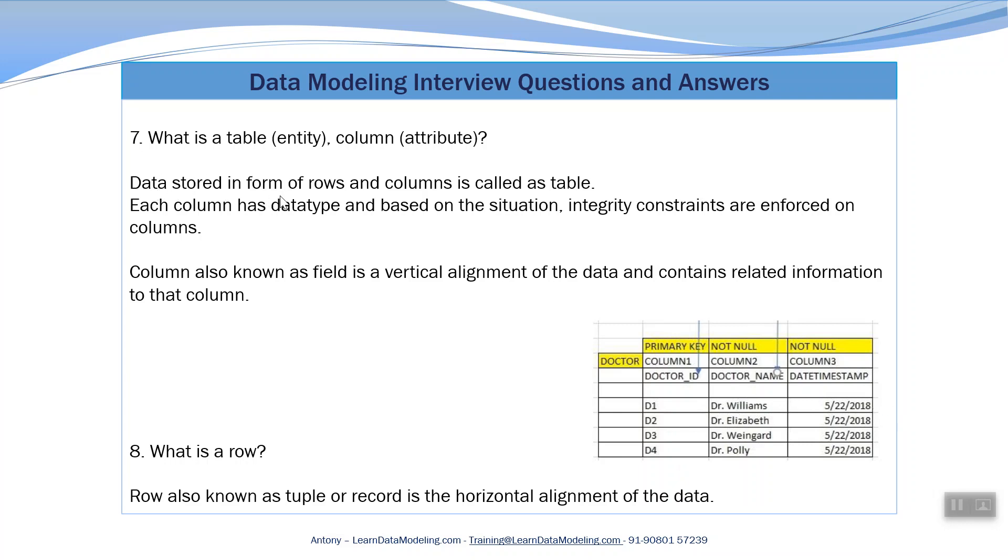Data is stored in forms of rows and columns. Here you can see this data is stored in the forms of rows horizontally and vertically in columns. Each column has a data type. This D1 has got a data type called as text. In Oracle it is called as VARCHAR2 or character.